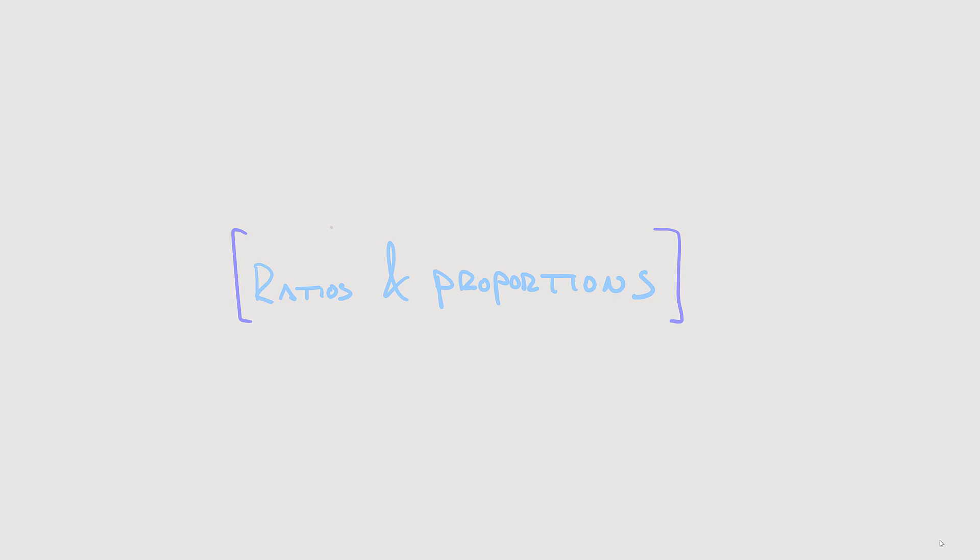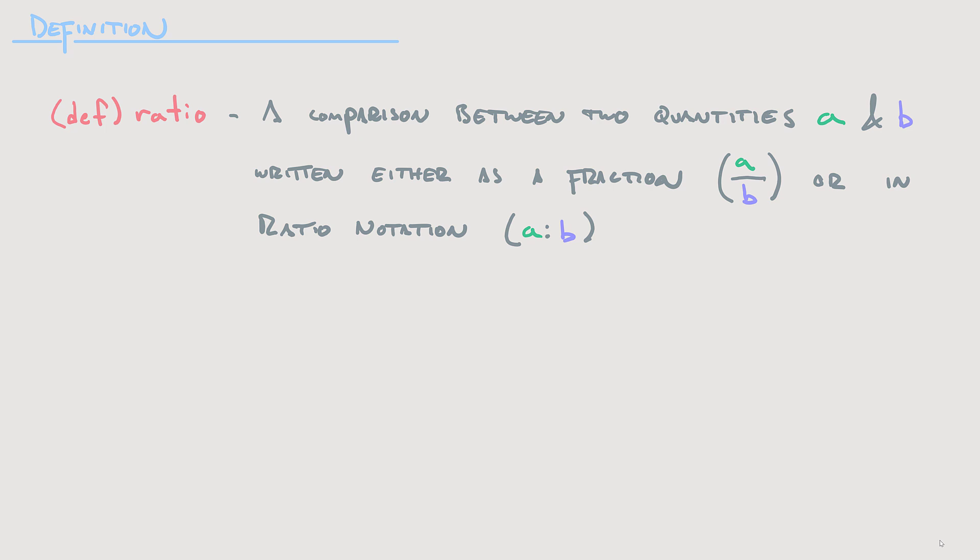Hello once again class, and welcome to another mock lecture. Today we're going to be tackling ratios and proportions. We'll start with the definition of a ratio, which is a comparison between two quantities — we'll call them A and B — written either as a fraction like A over B, or in ratio notation A to B.